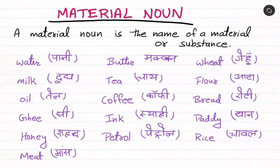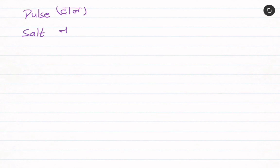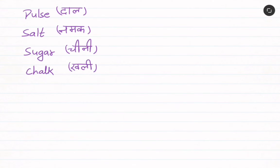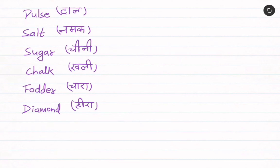More examples include pulse, salt, sugar, chalk, fodder, diamond, gold, silver, brass, iron, wood, and many more. That's all for today in this video.